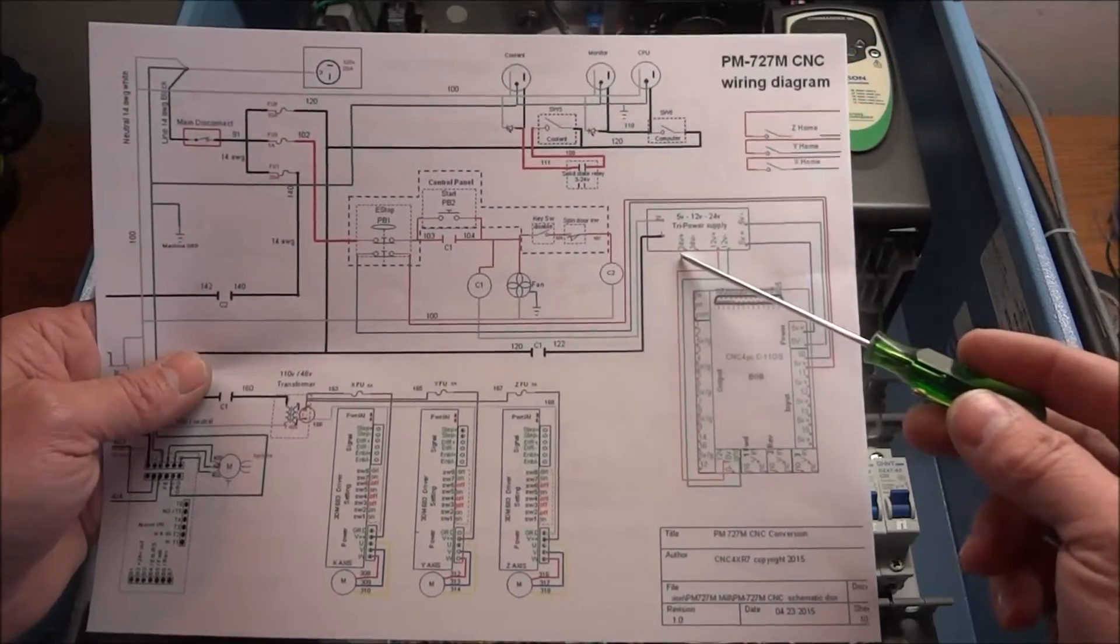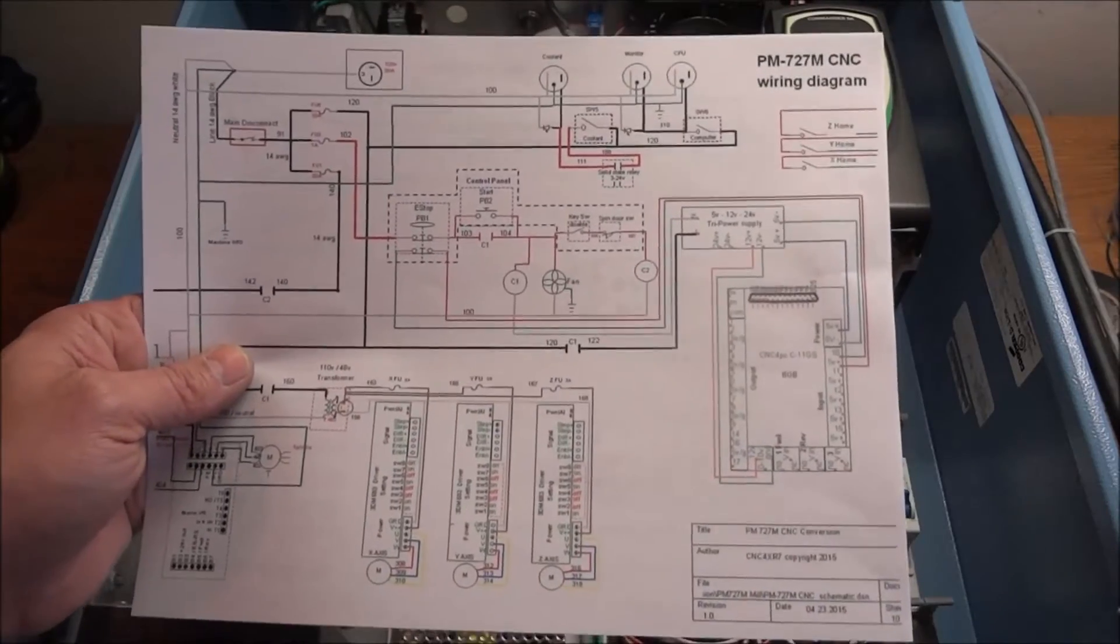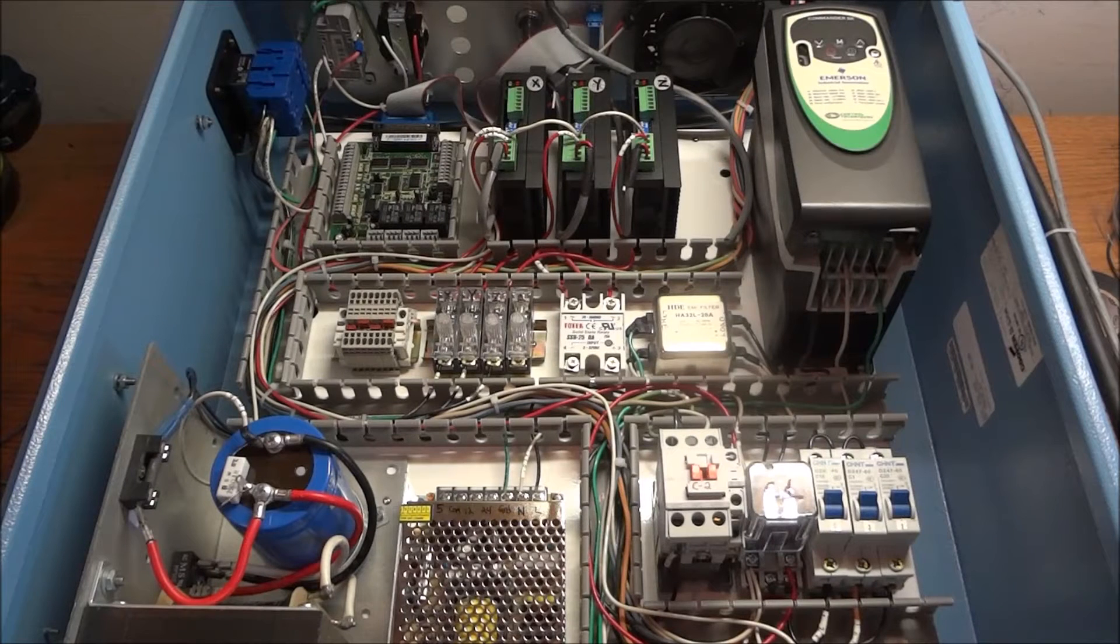And then we're also going to land 24 volts on a terminal strip for a future power draw bar. As I'm going along with this build, things seem to kind of be dynamic. They're ever changing.